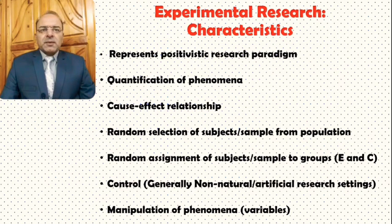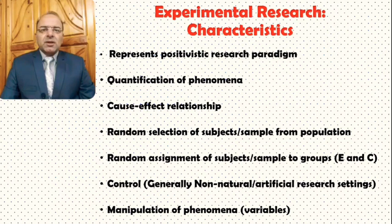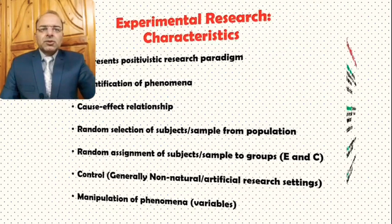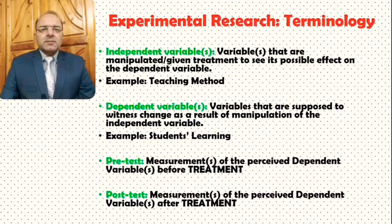The next important characteristic is that in experimental research there happens the manipulation of phenomena, which means manipulation of variables — especially manipulation of the independent variables. This means that some change is brought in the independent variables in order to observe or evaluate its effect on whether or not it changes the dependent variable. These were some of the characteristics of experimental research.